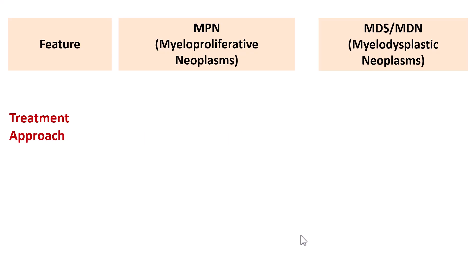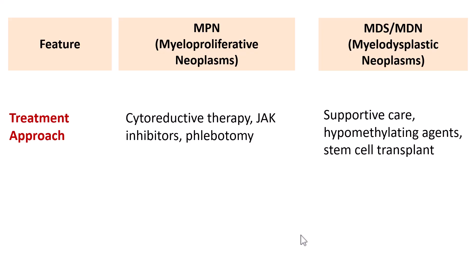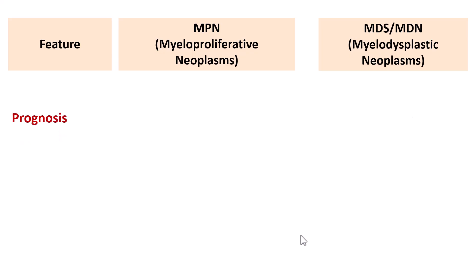Treatment for MPN aims at cytoreductive therapy to decrease cell counts — JAK inhibitors and phlebotomy are used in different entities. Whereas in Myelodysplastic Neoplasms, it is often supportive care — managing anemia, infections, and bleeding — along with hypomethylating agents. Stem cell transplant is the only curative hope for MDS patients.